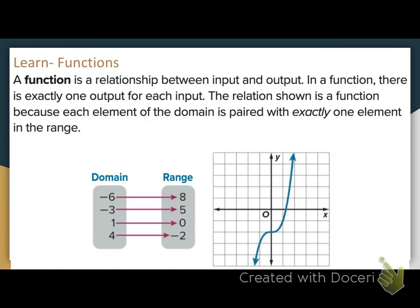In a function, there is exactly one output for each input. The relation shown below is a function because each element of the domain is paired with exactly one element in the range.